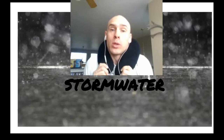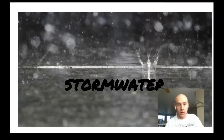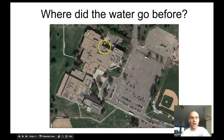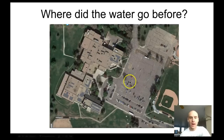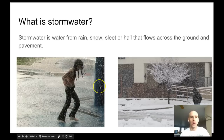Stormwater - that's not the real concern. The question we need to ask is: where did the water go before we developed? Here's an overhead shot of Centaurus High School and this large parking lot area. Where did all the water go before this development was here, when it was just grass and vegetation?